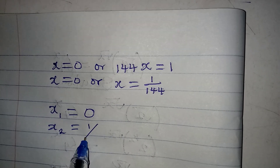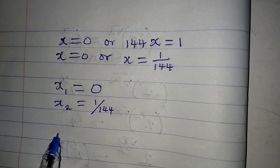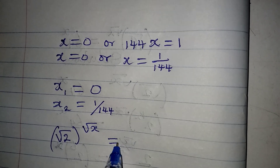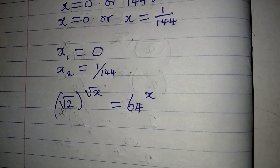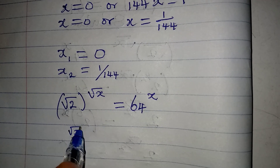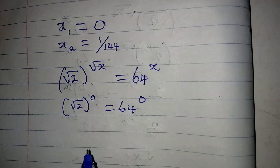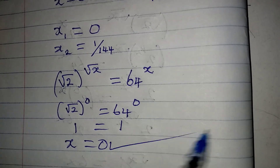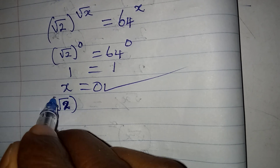Let's go back to the original equation to check: square root of 2 to the power of square root of x equals 64 to the power of x. Substituting x equal to zero, we get square root of 2 to the power of zero on the left and 64 to the power of zero on the right. Any number to the power of zero is one, so we have one equals one. Therefore x equal to zero satisfies the equation.